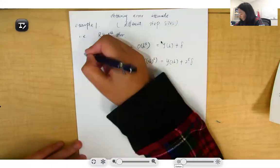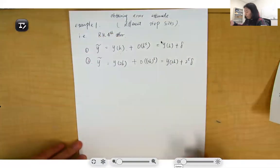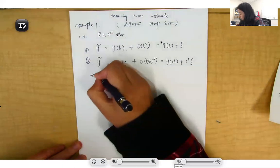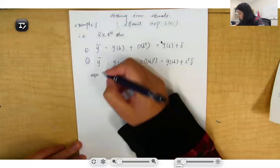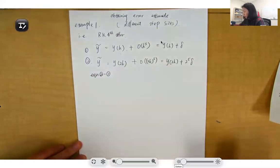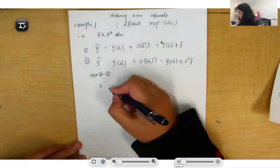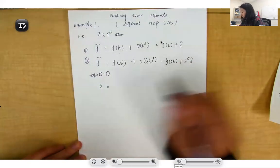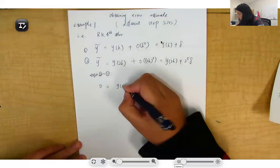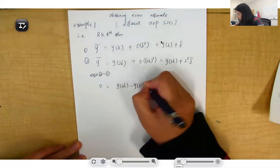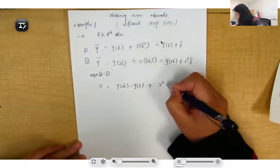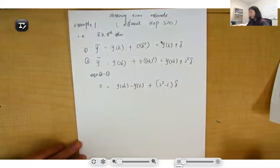Then you can use equation 1 and equation 2, and subtract them. The left hand side, because that is the true value, y minus y equals 0. The right hand side will be y_2h - y_h + (2^5 - 1)·σ.